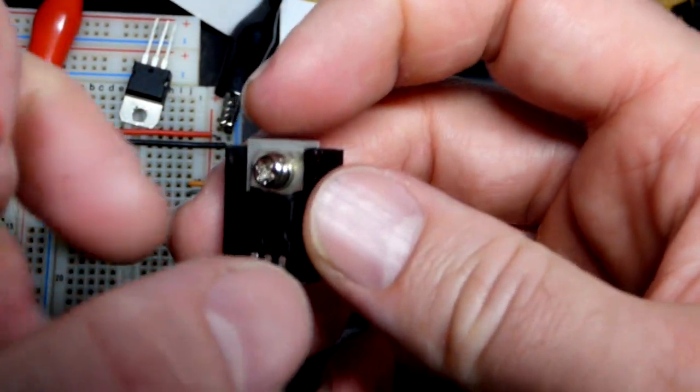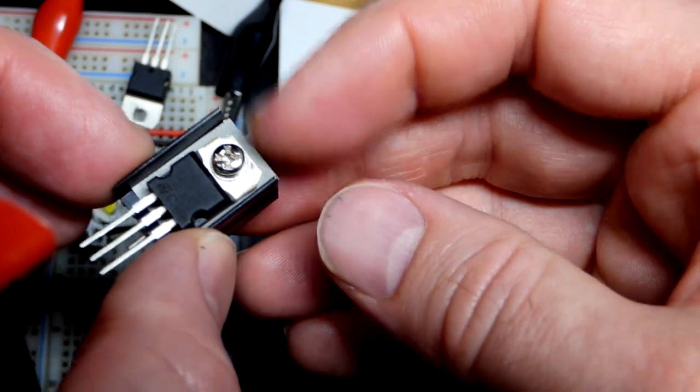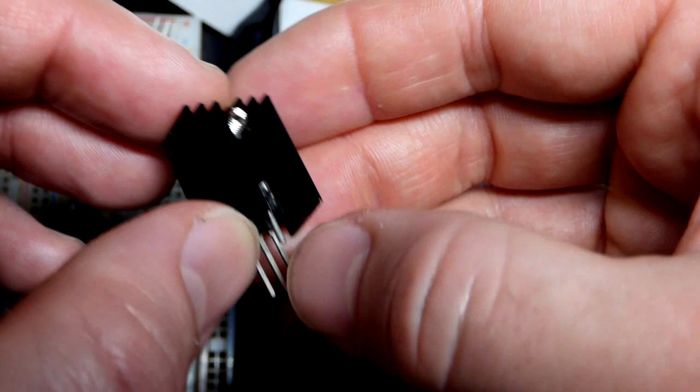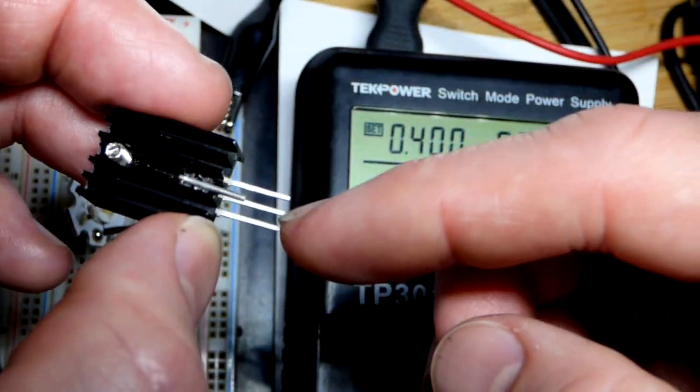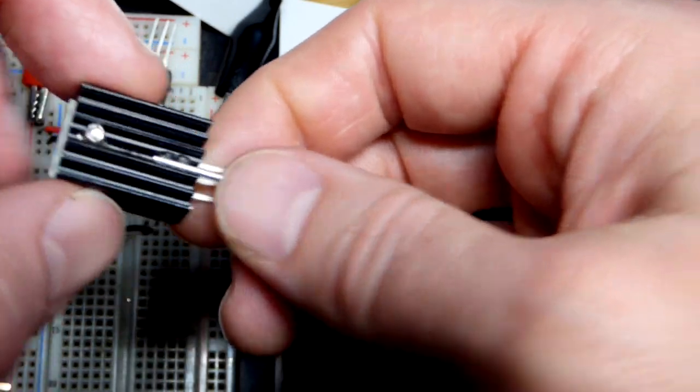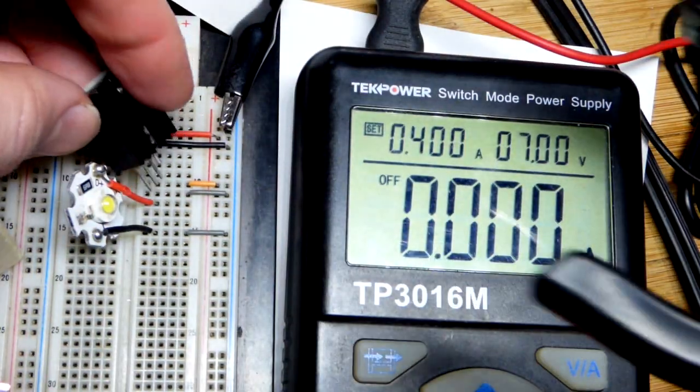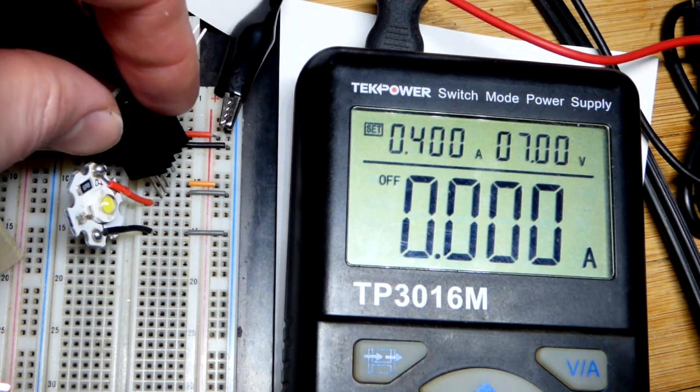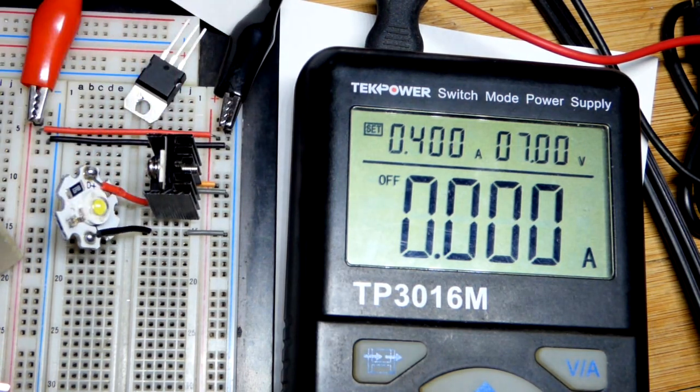Also, the heat sink goes to the metal tab—it's still hot from my earlier testing. This metal tab on the back is electrically connected to this middle pin right here. The metal tab and the middle pin are the same connection, so we've got to make sure that whatever we touch with the heat sink is the same thing that's touching the middle pin.